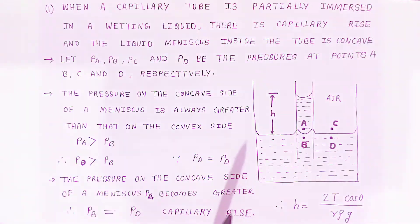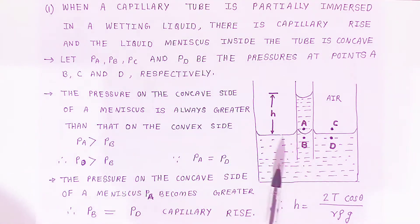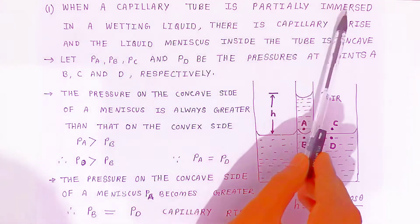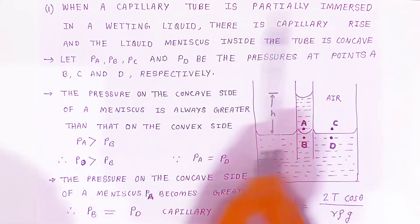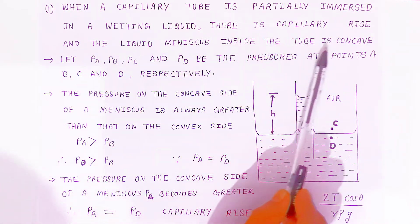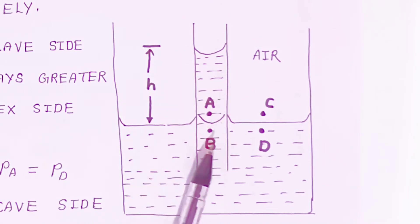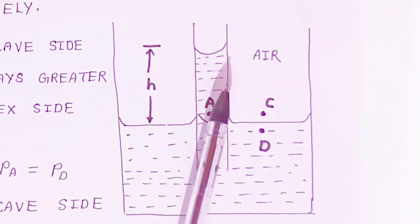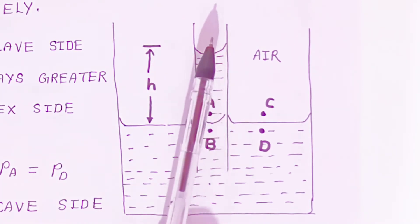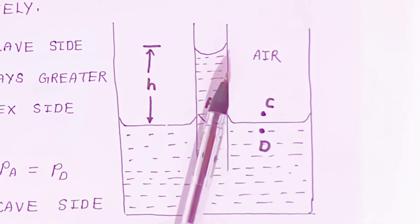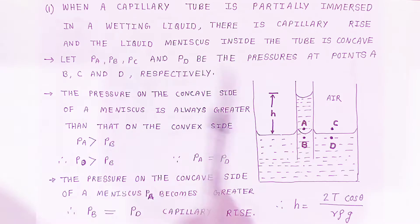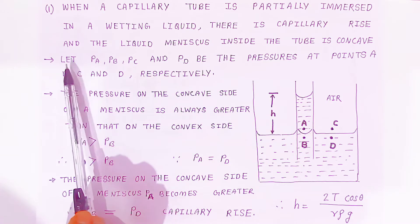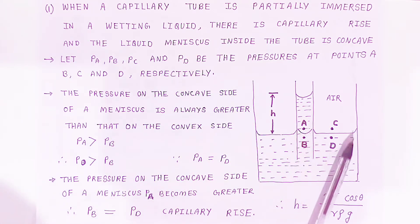When a capillary tube is partially immersed in a wetting liquid, there is a capillary rise and the liquid meniscus inside the tube is concave. To explain this rising, we consider four pressure points A, B, C, and D. The pressure on the concave side of the meniscus is always greater than the pressure on the convex side.